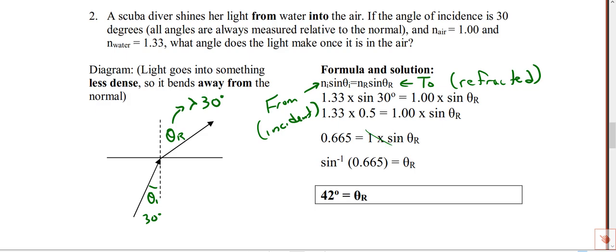To do that, it comes to the other side. When it does so, it becomes inverse sine. Sine of the negative 1, or inverse sine of 0.665, gives us 42 degrees, which is bigger than 30. It matches our expectations.